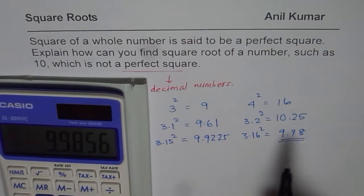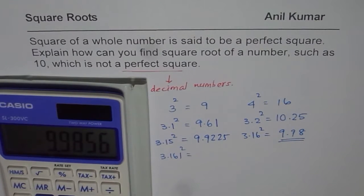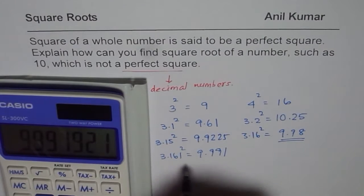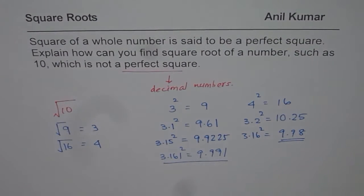If you want to go closer, you can try 3.161 square. 3.161 times 3.161 equals to 9.991. So that seems to be a fairly good approximation.